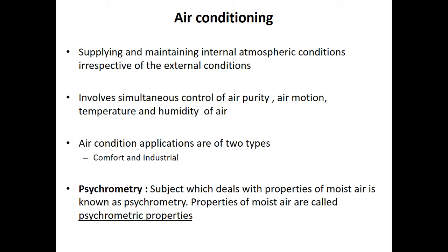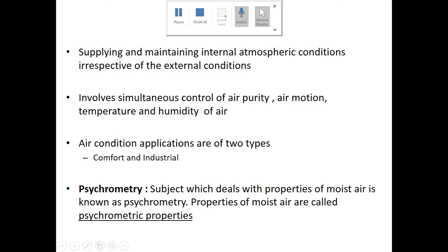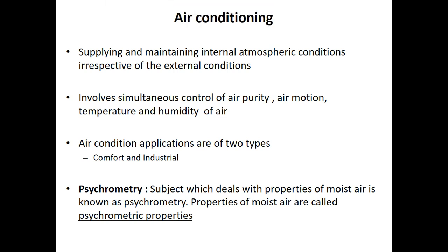To discuss the different parameters associated with air conditioning, we must understand psychrometry. Psychrometry is a branch of science which deals with the properties of moist air. The properties of moist air are called psychrometric properties. We are going to discuss the different special terms used in the study of psychrometry.